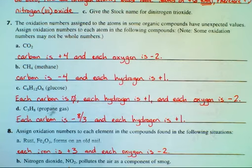Number 7. The oxidation numbers assigned to the atoms in some organic compounds have unexpected values. Assign oxidation numbers to each atom in the following compounds. Note, some oxidation numbers may not be whole numbers.